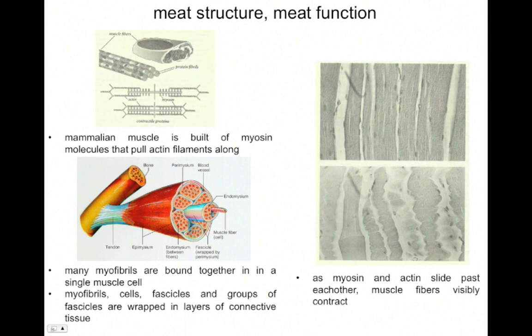Very important for us, obviously, are these proteins. We know that meat is very high in protein. But we also have to deal with connective tissue in coping with cooking, what could otherwise be a tough product.